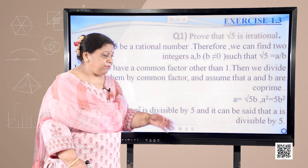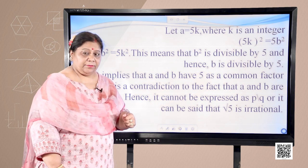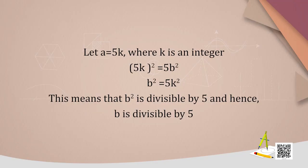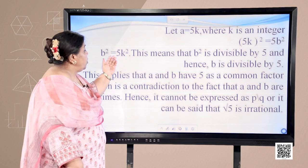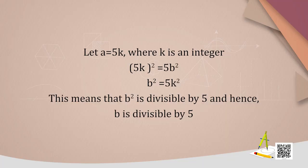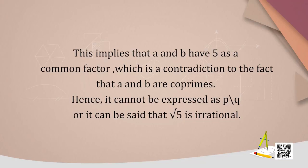Since a² is divisible by 5, it can be said that a is also divisible by 5. Let a = 5k, where k is an integer. On substituting we get (5k)² = 5b², which implies b² = 5k². This means that b² is divisible by 5 and hence b is also divisible by 5. So this implies that a and b have 5 as a common factor, which is a contradiction to the fact that a and b are co-prime.